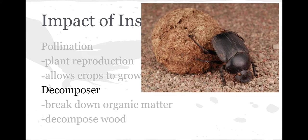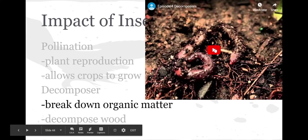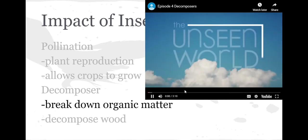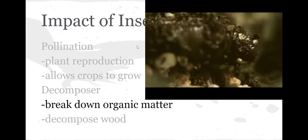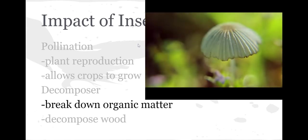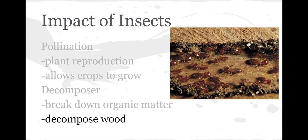Insects are also decomposers. They break down organic matter and help decompose wood. Here's an example of insects chewing up and breaking down material, helping to decompose things in the world around us. Wood has a material called cellulose, which is very hard to break down, but termites are able to digest and break down that cellulose.